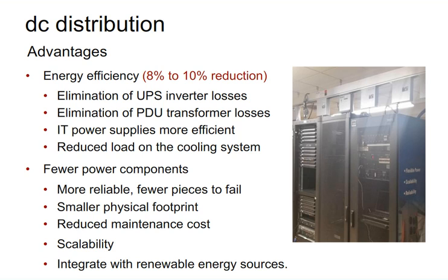One negative of higher voltage distribution is fault current. By removing the transformer, you lose impedance that limits fault current. You need to keep systems smaller, utilize the fan rating for emergency modes, and make sure you're using correctly rated equipment. In a multi-module UPS system, when there's a fault it goes to bypass — a 4,000-amp bypass with no impedance to cut fault current down. Keeping UPS modules into smaller individual systems can really cut that fault current down.